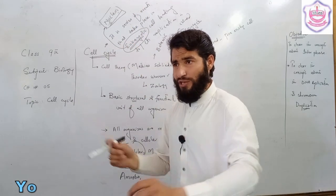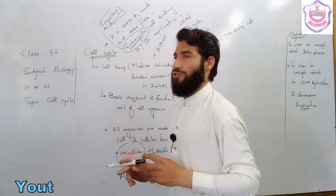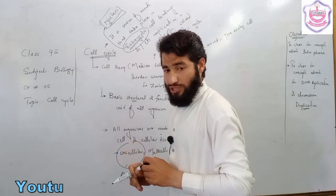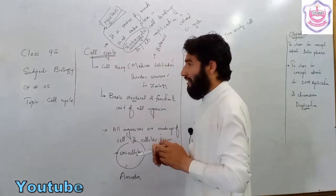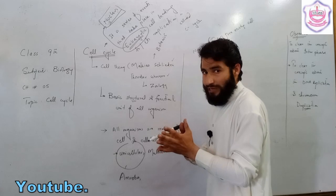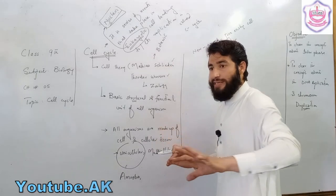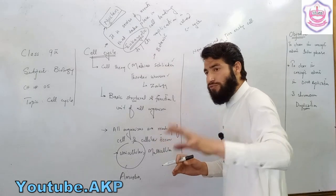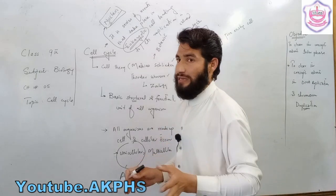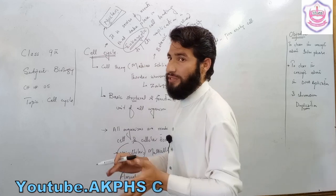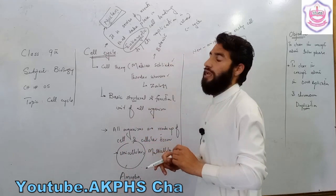For example, human beings or higher plants have a well-defined nucleus and are eukaryotic. Cells that lack a membrane-bound nucleus are prokaryotic cells.